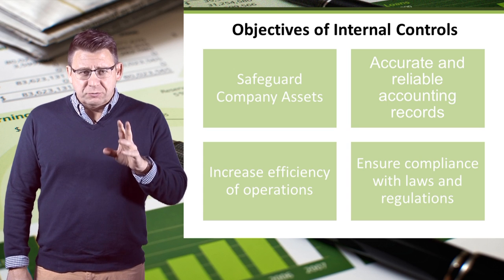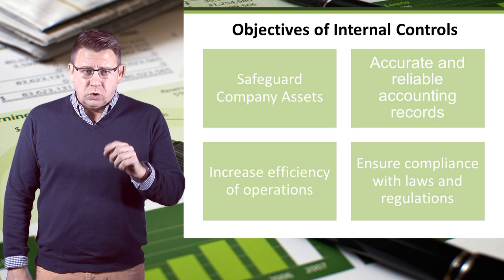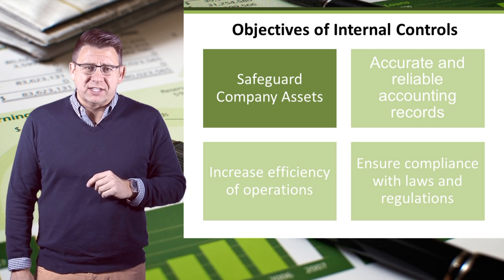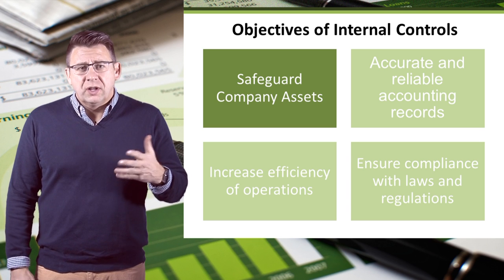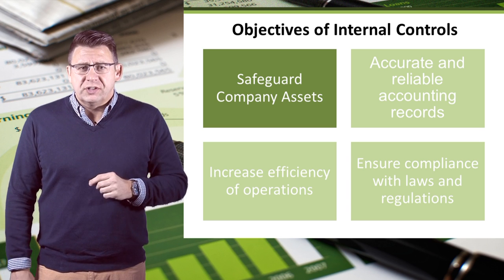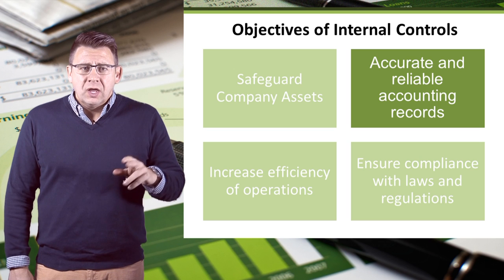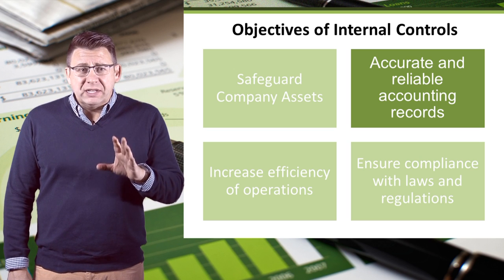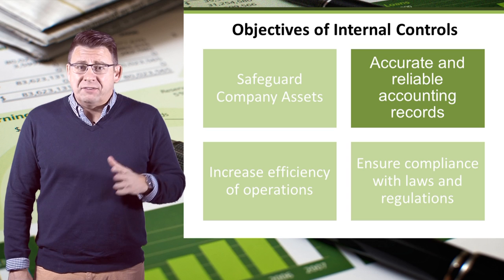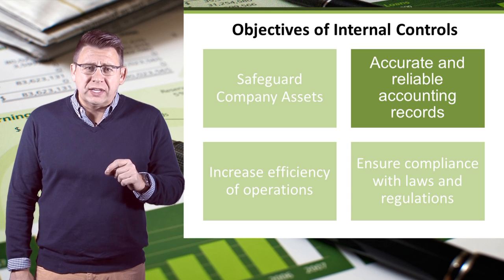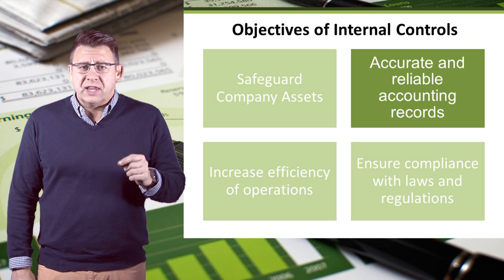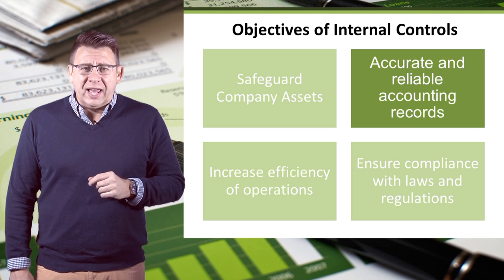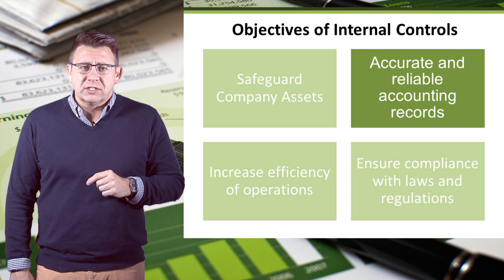Let's look at each of these objectives in more detail. Companies must protect their assets from theft, destruction, and misuse. Policies help organizations meet goals and objectives. Having policies helps ensure that employees are doing the same task the same way, which aids in producing accurate, reliable accounting records.